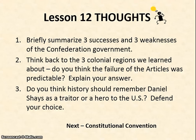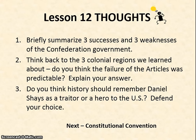So our Lesson 12 thoughts: Number one, briefly summarize three successes and three weaknesses of the Confederation government. Number two, think back to the three colonial regions we learned about and explain why the failure of the Articles was predictable. Number three, this is a judgment call — do you think history should remember Daniel Shays as a traitor or a hero to the U.S.? Think about and defend your choice. That brings us to our next lesson: the Constitutional Convention — a very important one, so we'll see you then.